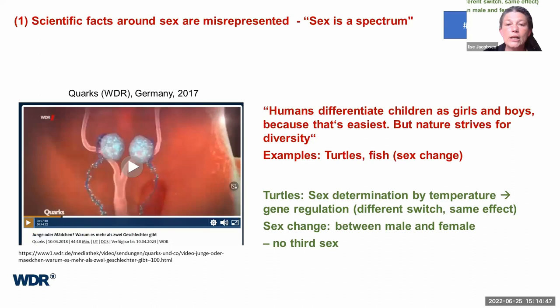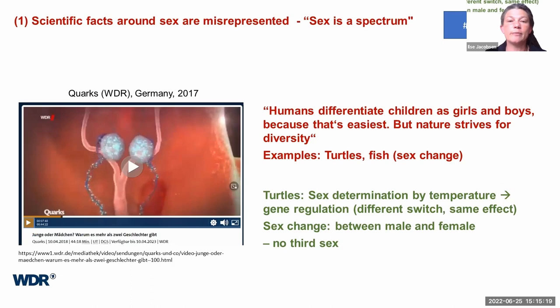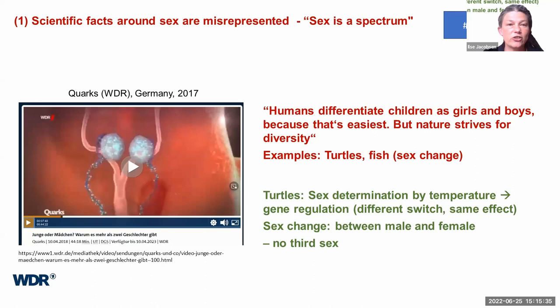Another quote that made me uncomfortable: 'Humans differentiate children as girls and boys because that's easiest' — implying that nature is better than humans, as 'nature strives for diversity.' They provide two examples: turtles and fish. In turtles, sex is determined by external environmental temperature, which drives gene regulation, leading an embryo into a male or female differentiation pathway — the switch is different but the process is the same; it's not more diverse. And sex change in fish, which doesn't happen in humans — they change from male to female or vice versa. There is no third sex in fish.